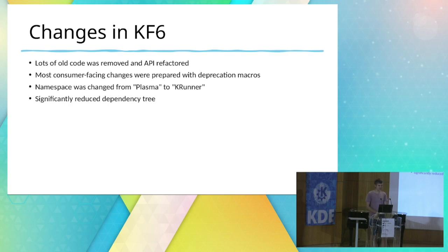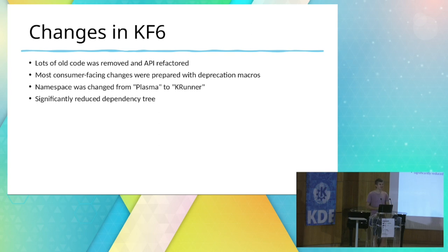In KDE Frameworks 6 there were quite a lot of changes: lots of code removed, API refactored, and many KDE4 leftovers removed — like the Run Options API which was entirely defunct. Most consumer-facing changes were prepared with deprecation macros. The namespace was changed from Plasma to KRunner, since KRunner is now its own framework and no longer part of Plasma. We also have a significantly reduced dependency tree — in KF5, KRunner depended on Plasma Frameworks in its public API, but now it only depends on KActivities internally and KCoreDirLister in its public API, plus Qt Core.